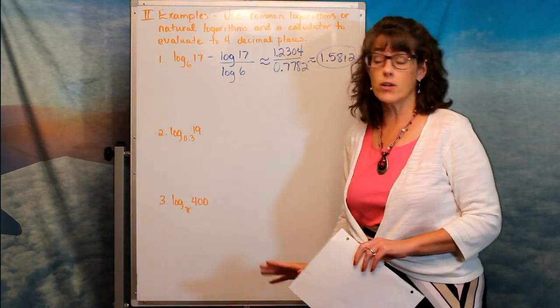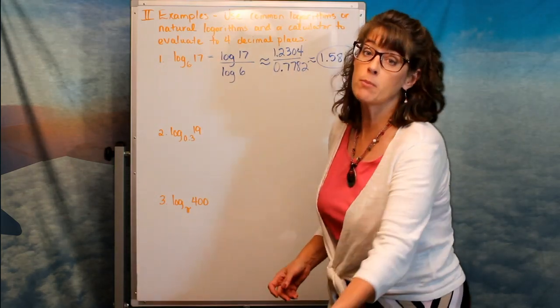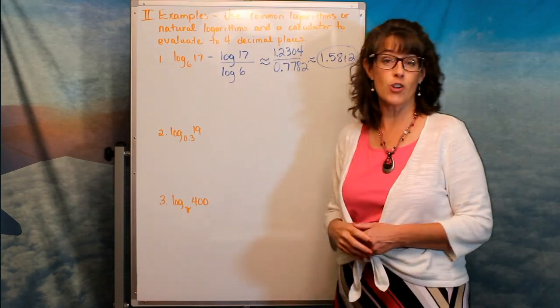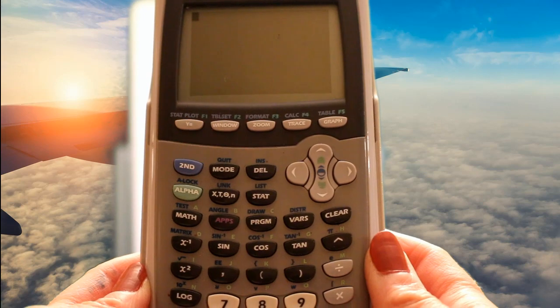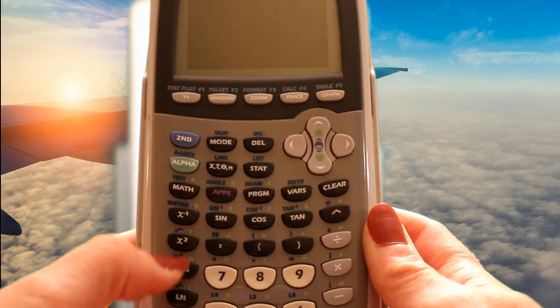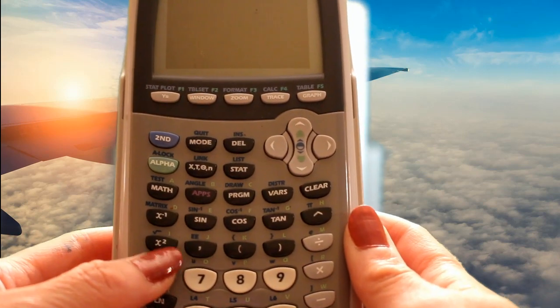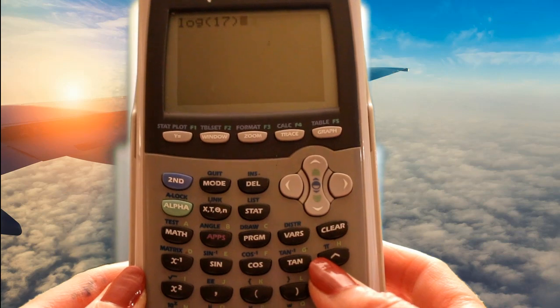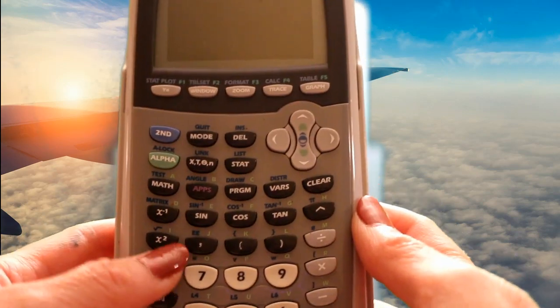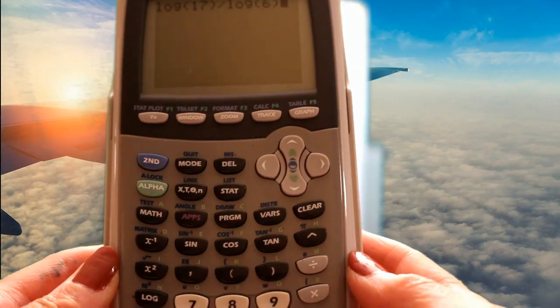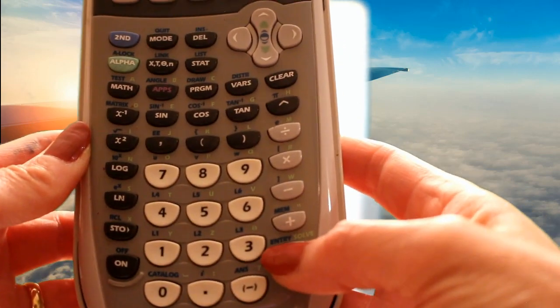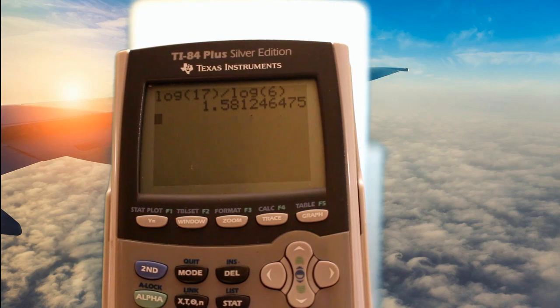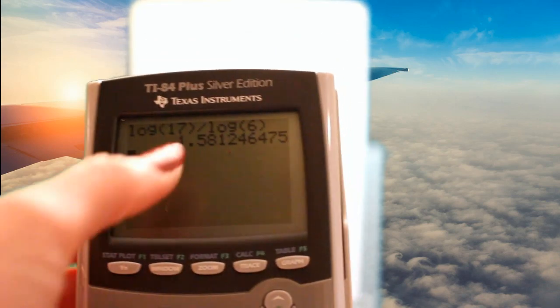Now let me show you how the graphing calculator works. Here is my graphing calculator. I hit log of 17, finish that off, and the beauty of the graphing calculator is I don't have to hit enter — I can go ahead and hit divide, then punch in log of 6, finish that off, and the calculator does all of it. Hit enter, and I get 1.518246475, which rounds to 1.5182 — exactly the same answer as with the scientific calculator.